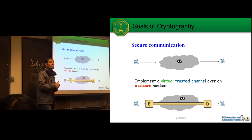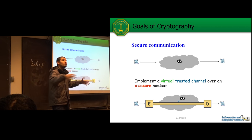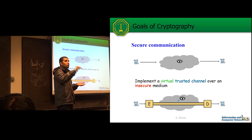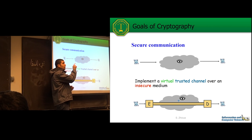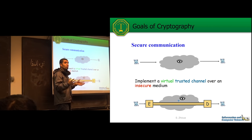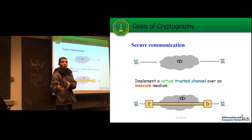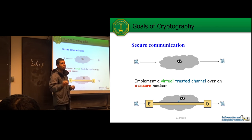Cryptography is used in two main scenarios. The first is secure communication — you need to send data through an insecure medium, and all the mediums we have are kind of insecure because anyone in the path, whether it's a router, a hop, or the internet service provider, can see the bits. The goal of secure communication is to implement a virtual trusted channel by transforming data in a way that is unintelligible to observers.